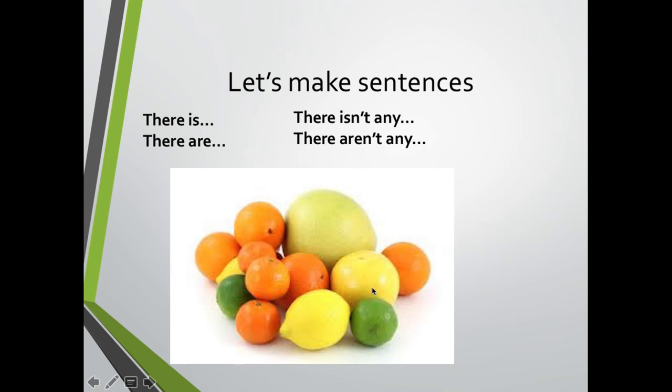Let's continue and let's make sentences. For example, there is a melon. There is a melon. Hay un melon. A esa A de a melon no le agregué la N. ¿Por qué? Porque la palabra que sigue, melon, comienza con consonante. ¿Cierto? Por lo tanto la A queda tal cual. There is a melon. What about plural? Let's make a sentence using plural nouns. There are one, two, three, four, five, six, seven. There are seven oranges.